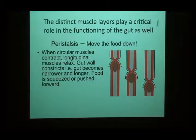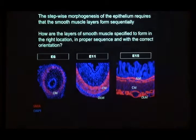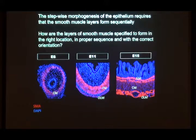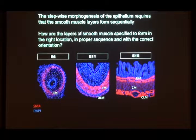These muscle layers are also very important in the adult — they are the muscles that allow food to move through your gut. The contraction of the circumferential muscles pushes on the food, while the relaxation of the longitudinal muscles gives more space to move the food down the gut. So getting these muscle layers to form embryonically in the right place and right orientation is critical both for formation of the villi and for adult physiology.